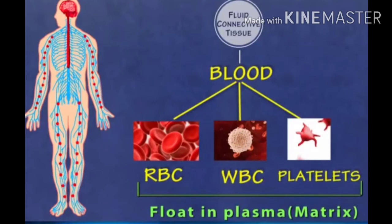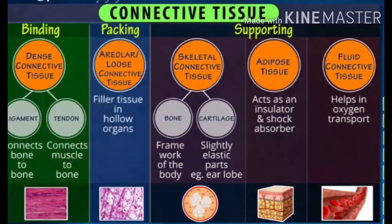Blood is another type of connective tissue. It has a fluid matrix called plasma. In this, RBCs, WBCs and platelets are present. The plasma contains proteins, salts and hormones. Blood flows and transports gases, digested food, hormones and waste material to different parts of our body. So blood is a fluid connective tissue suspended in a liquid medium which is plasma.